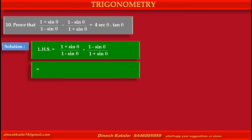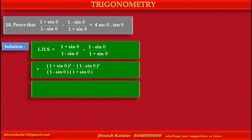Since the denominators of these two terms are different, by cross multiplication we get: at the numerator, the first term becomes (1 + sinθ)(1 + sinθ), that is (1 + sinθ)², minus the second term which becomes (1 - sinθ)(1 - sinθ), that is (1 - sinθ)². Expanding the first bracket: 1 + 2sinθ + sin²θ.